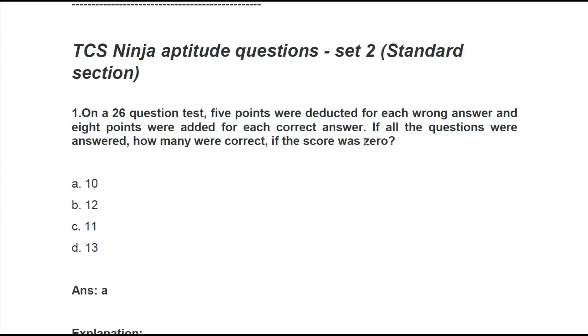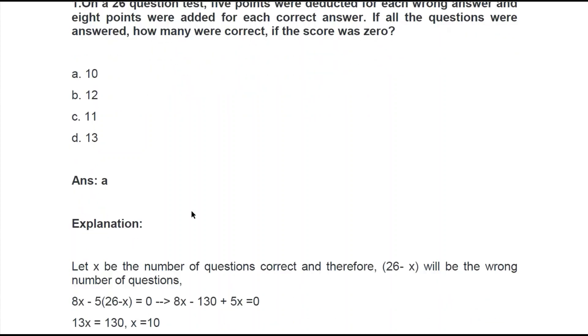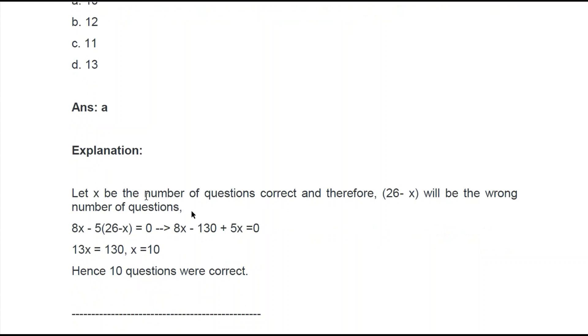Now the overall score was zero. So what we can write is 8x minus 5 into 26 minus x gives us zero. And we can solve the linear equation and get the answer. So let's see how they have solved it.